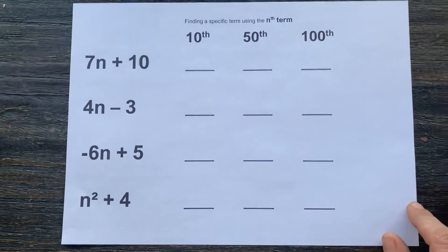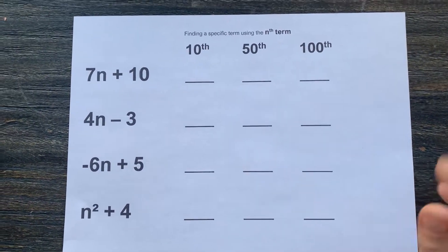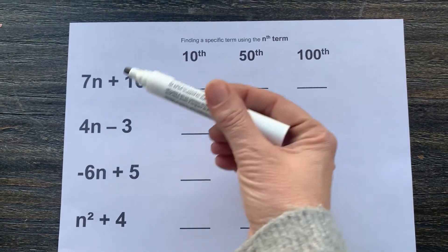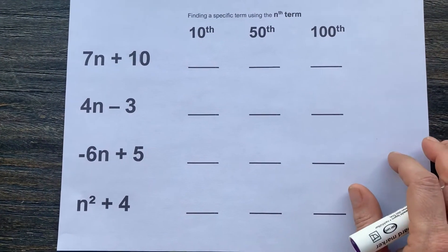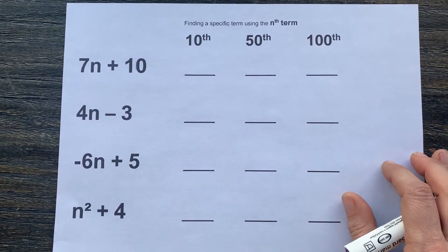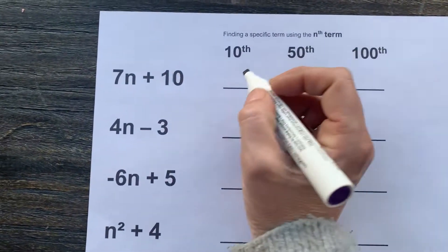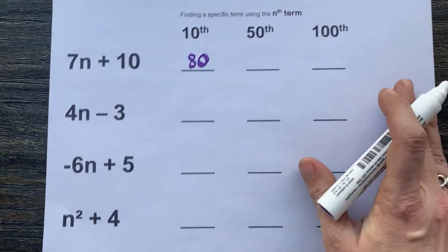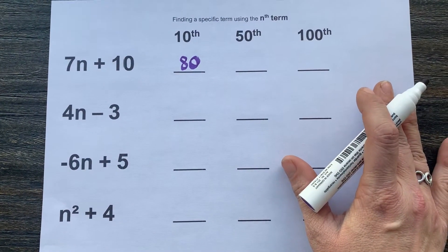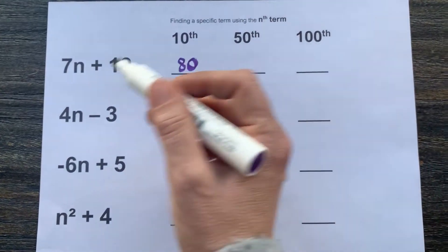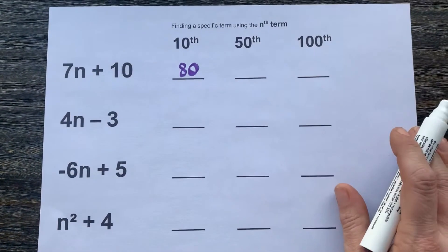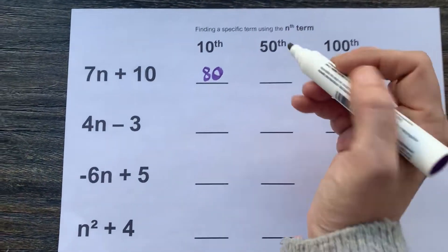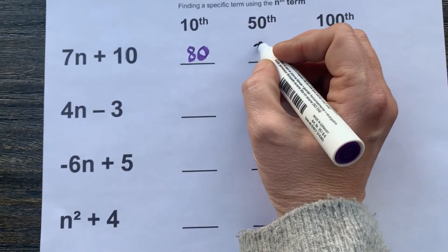So if we look at the first formula, 7n plus 10, to find the 10th term in that sequence, we would plug in 10 for n. So it becomes 7 times 10 plus 10: 7 times 10 is 70, plus 10 would be 80. If we look to find the 50th term for this sequence, we would plug in 50 for n. So 7 times 50 would be 350, plus the 10 would give us 360.